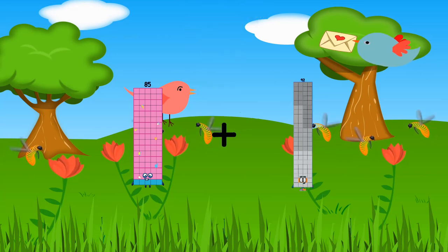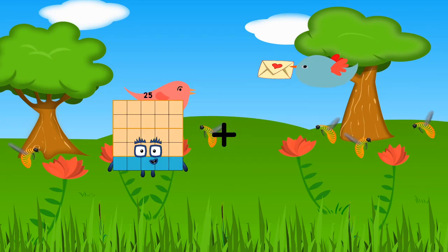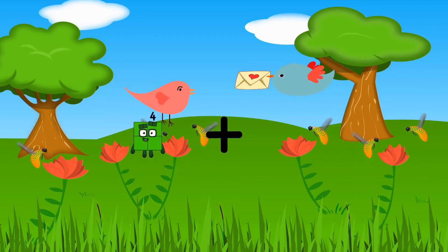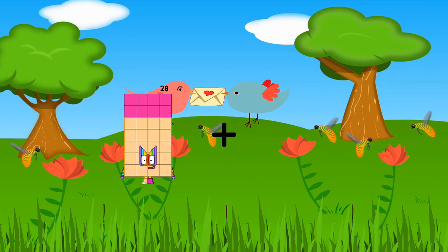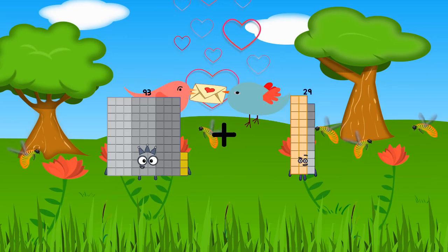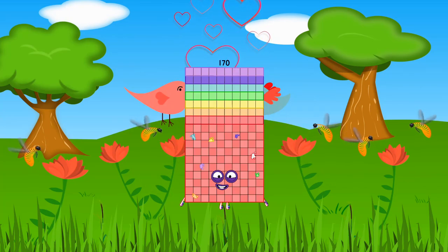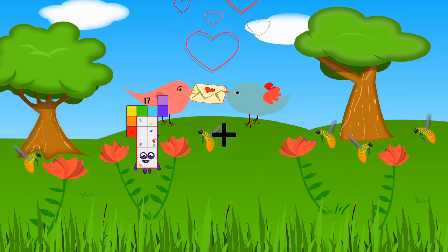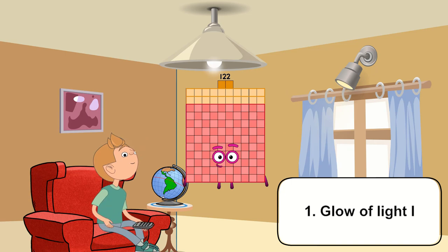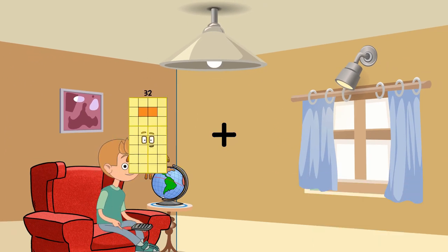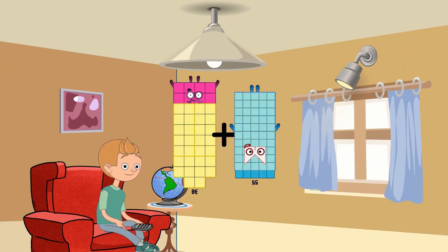85 plus 35 equals 120. 23 equals 27. 93 plus 77 equals 117. 17 plus 105 equals 122. 38 plus 55 equals 93.